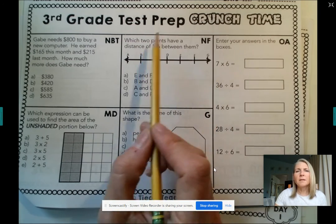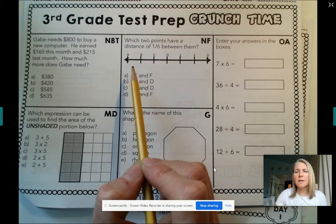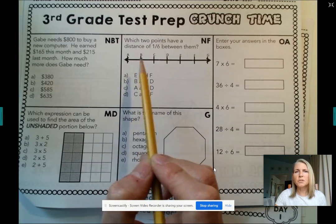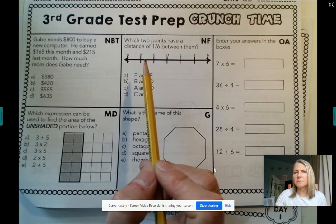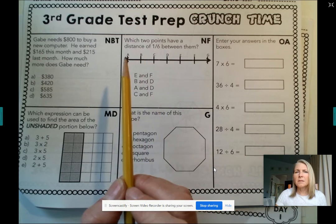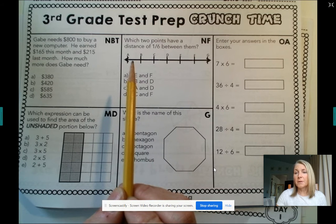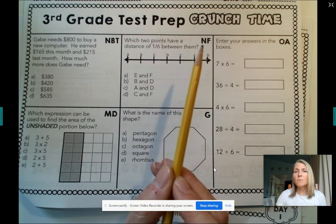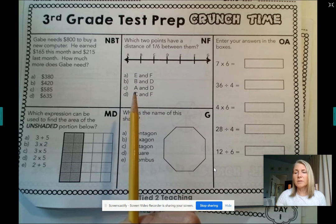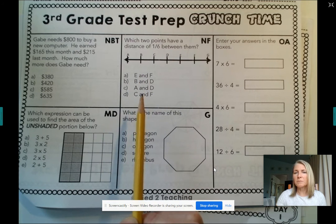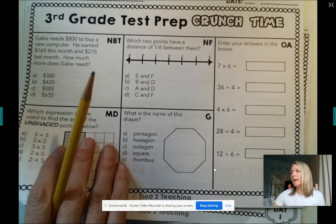This one - I know we haven't looked at number lines in a little while. Which two points have a distance of one-sixth between them? What you're going to need to think to yourself is, what has this line been partitioned into? And once you understand that fraction, you should be able to figure out which ones actually only have a sixth between them.